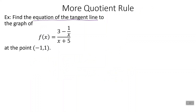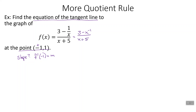To find a tangent line we need a point — they gave us a point, isn't that nice — and we need a slope. So that means we need to find the derivative when the x value is negative 1; that's going to be our slope. We need to take the derivative of this function. This fraction on top of a fraction is not fun, but we can rewrite it as 3 minus x to the negative 1, over x plus 5. And now we can take the derivative using the quotient rule — we've got a low and we've got a high.